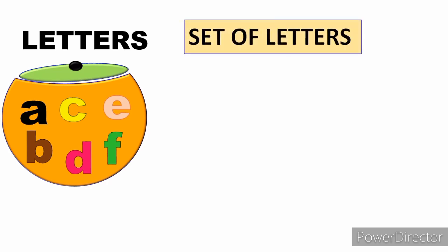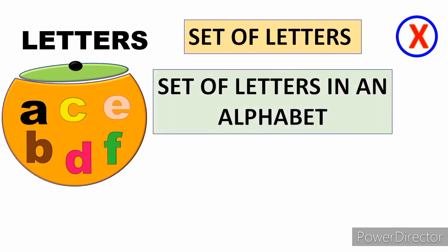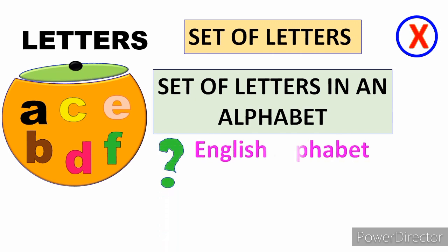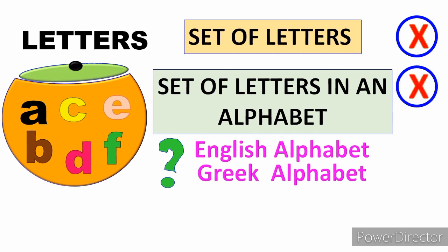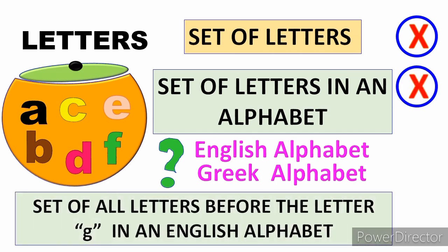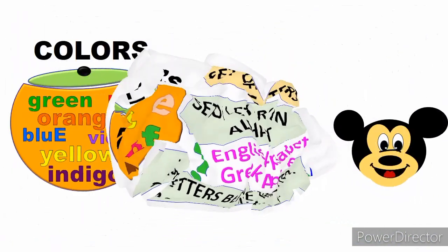For the group of letters (A, B, C, D, E, F), how do we make it well-defined? 'Set of letters' is not well-defined. 'Set of letters in the alphabet' is also not well-defined — which alphabet, English, Greek, or Filipino? However, 'set of letters before the letter G in the English alphabet' is well-defined, since those letters are A, B, C, D, E, F.